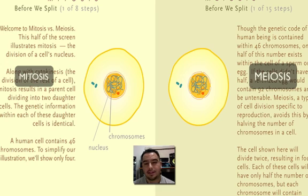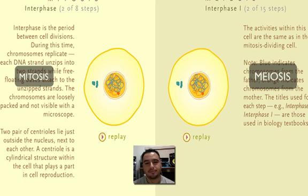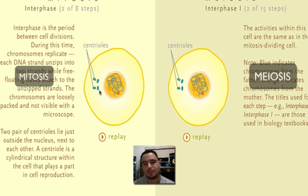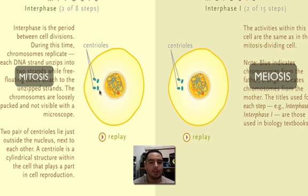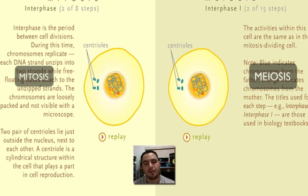This is interphase, so you're going to be going through G1 — the cell grows — then S phase where the DNA is going to be copied, and then G2. You also see as part of interphase in G1 that the centrioles duplicate; you want to double them up as well. That happens over here in meiosis and over here in mitosis.